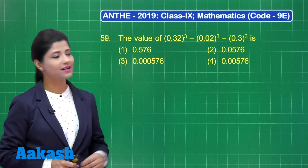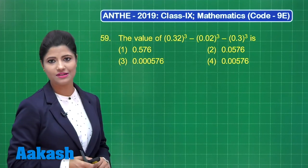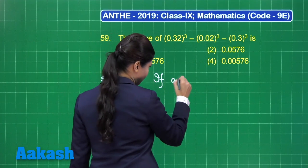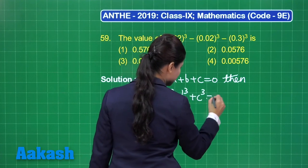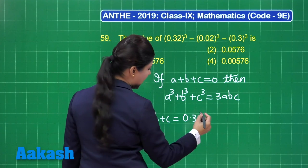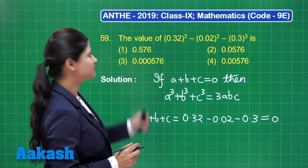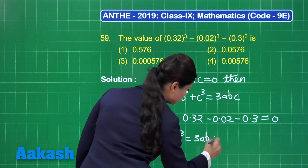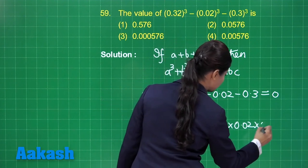Question number 59 states: the value of 0.32 cubed minus 0.02 cubed minus 0.3 cubed is which of these four options? Considering this in the form a³ + b³ + c³, and using the identity that if a plus b plus c equals 0 then a³ + b³ + c³ equals 3abc — with a as 0.32, b as minus 0.02, and c as minus 0.3 — their sum is clearly 0, so the expression equals 3abc.